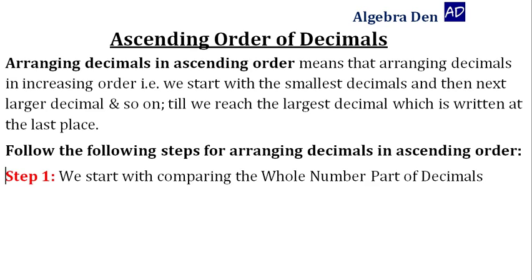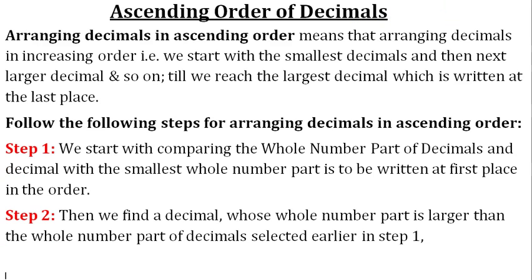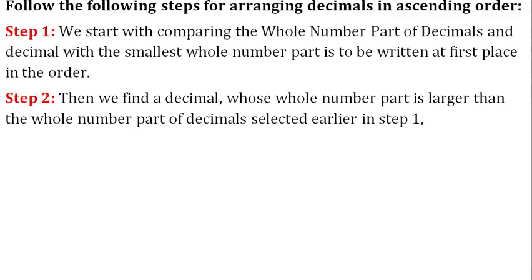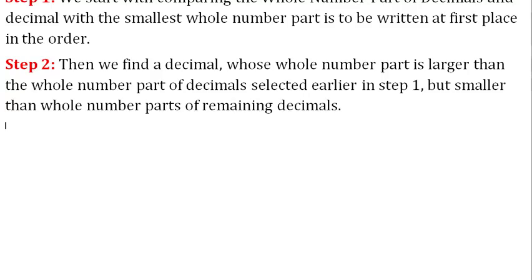Step 1: We start with comparing the whole number part of decimals, and the decimal with the smallest whole number part is to be written at first place in the order. Step 2: Then we find a decimal whose whole number part is larger than the whole number part of the decimal selected earlier in Step 1, but smaller than the whole number part of the remaining decimals.